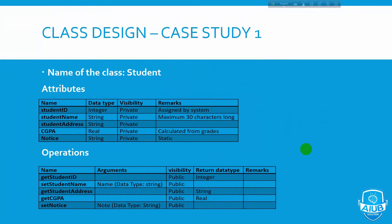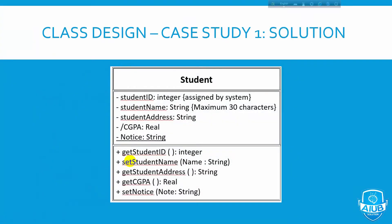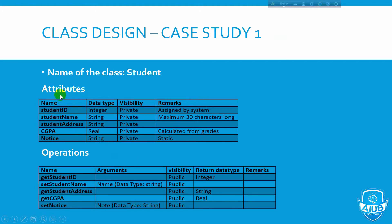Now let's solve a class design problem. The name of the class is Student. For the attribute, the student ID has visibility private, assigned by the system. The operation is 'get student ID', which is public and returns an integer.